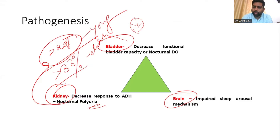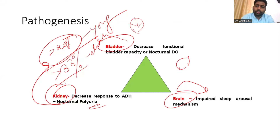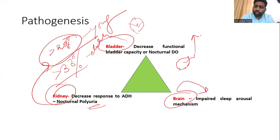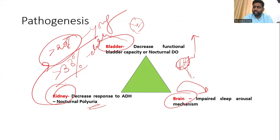At the level of the brain, there is an impaired sleep arousal mechanism. Normally, when the bladder is full, it sends a signal to the brain to wake up and go to the washroom. But in some children, the sleep arousal mechanism is not activated in response to a distended bladder, and so the bladder passes urine in the bed.